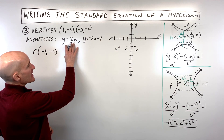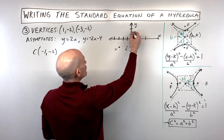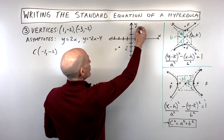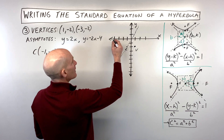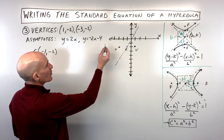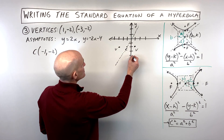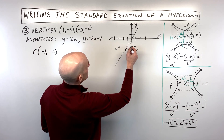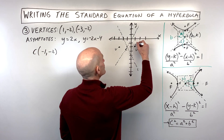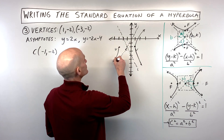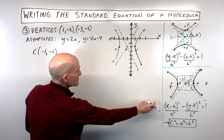Graphing the asymptotes: y = 2x passes through the origin with slope 2, and the asymptotes also pass through the center of the hyperbola. The other asymptote has a y-intercept of -4 and slope of -2. With this rough sketch we can see the hyperbola approaches those asymptotes, opening left and right.